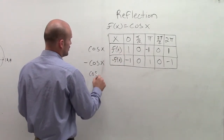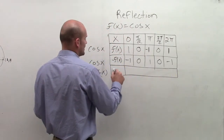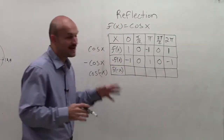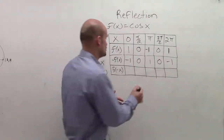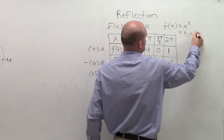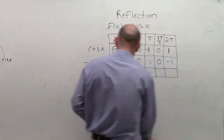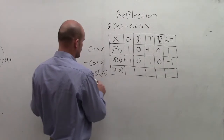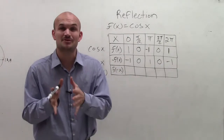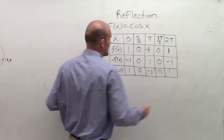Let's also look at cosine of negative x. Hopefully you remember when we talked about even and odd functions. Cosine is an even function, just like f(x) equals x squared. When you take negative x squared, you get back x squared. So cosine of negative x equals cosine of x. Therefore, cosine has symmetry over the y-axis, and cosine of negative x is not going to have any effect on the graph.